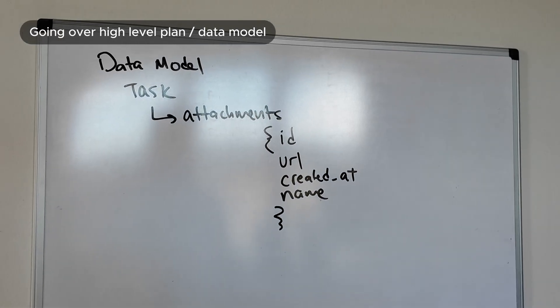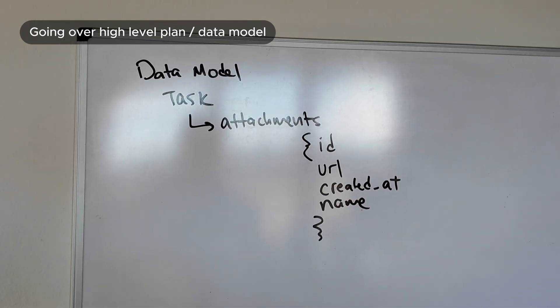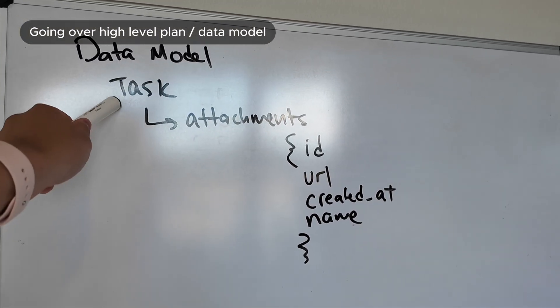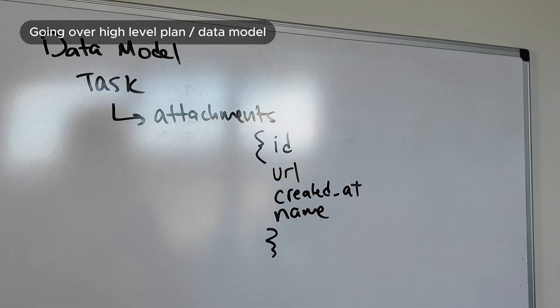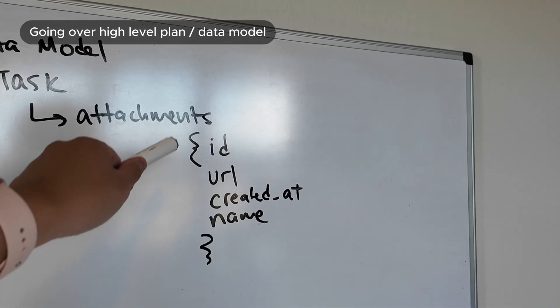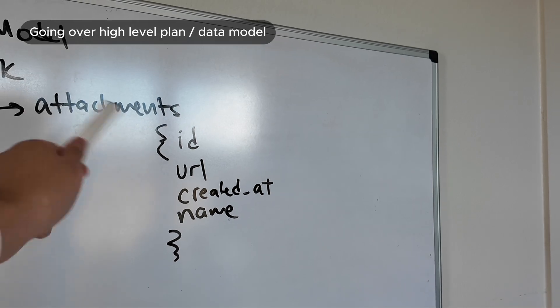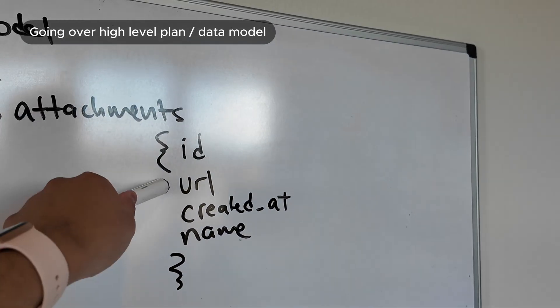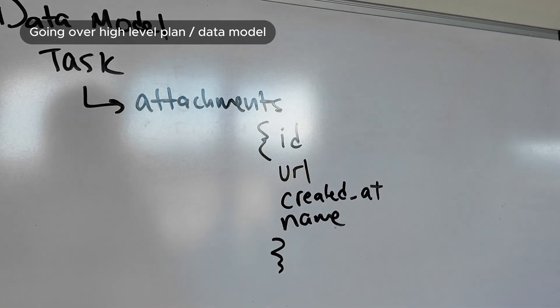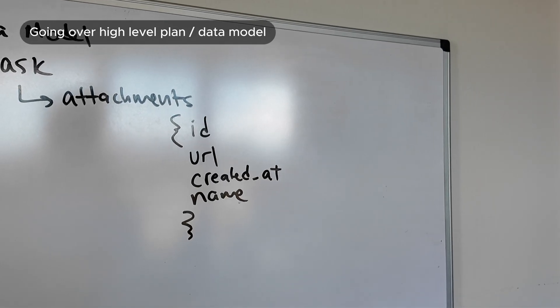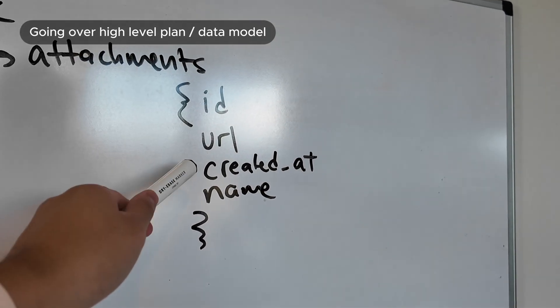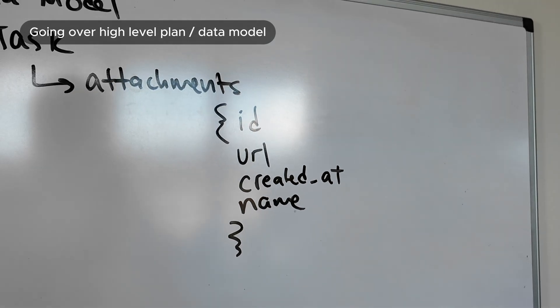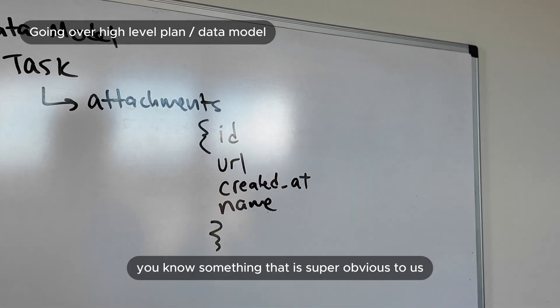First thing we're going to do is think through the data structure and some edge cases. Here's the whiteboard — honestly we didn't really even need it, looking at this it's not that complicated. Right now we have a task in the database, and we're just going to add a new field called attachments. It's going to be an object where the key is the attachment ID, which will point to a URL hosted on S3 — Amazon's cloud storage solution. We'll also store when it was created and the name of the file.